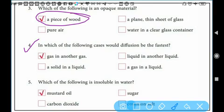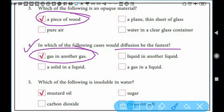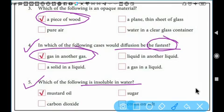In which of the following cases would diffusion be the fastest? Diffusion is fastest when particles are not tightly packed. In gases, particles are not tightly packed, so gas in another gas - diffusion is fastest in gases.